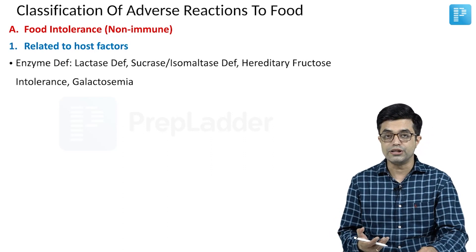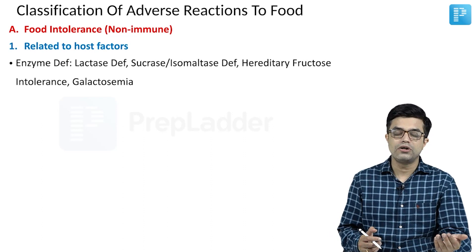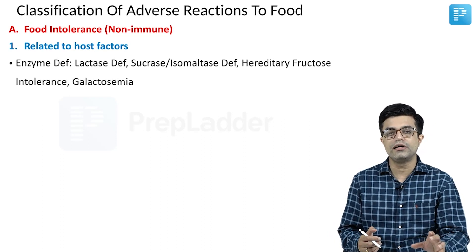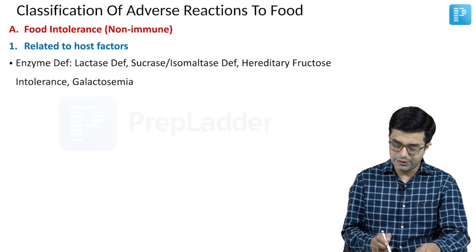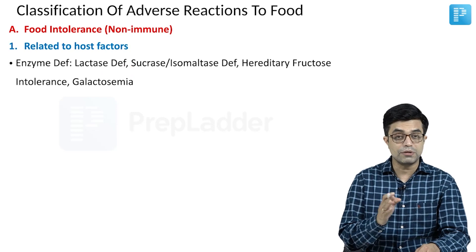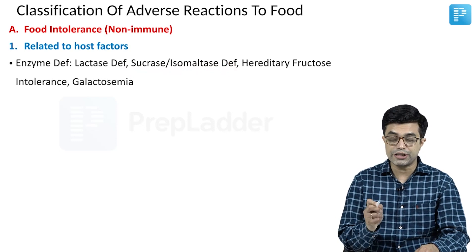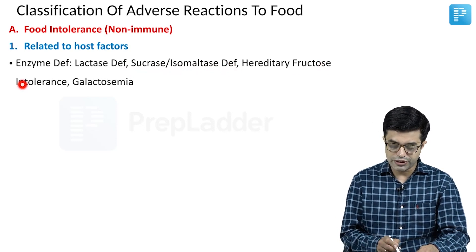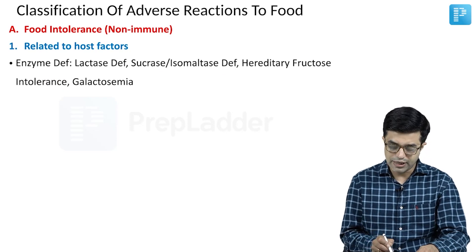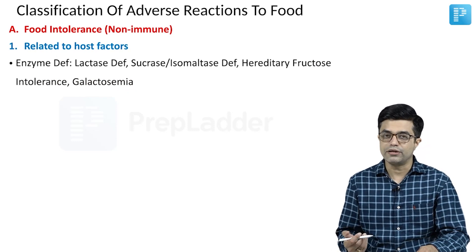The child who developed this reaction is not producing enzymes to digest a particular substance, so intolerance develops because the digesting enzyme is absent. The typical example is lactase deficiency — it can be primary or secondary. We also have sucrase-isomaltase deficiency, hereditary fructose intolerance which is a type of inborn error of metabolism, and galactosemia which is again an enzyme deficiency leading to inborn error of metabolism.